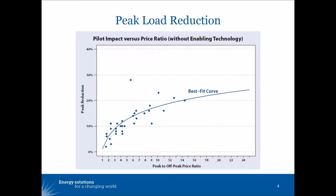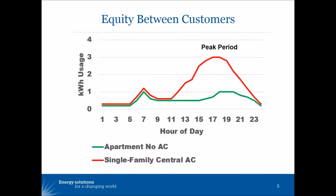Once you get up into the 7-to-1 ratio, you might get a 15% peak load reduction. These are measured without enabling technology, something that we'll talk about a little bit.